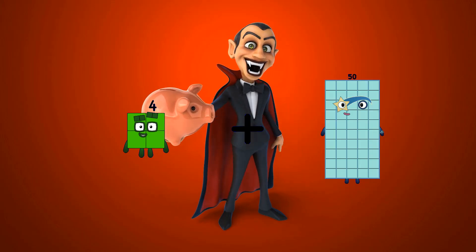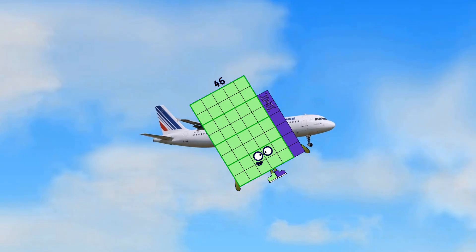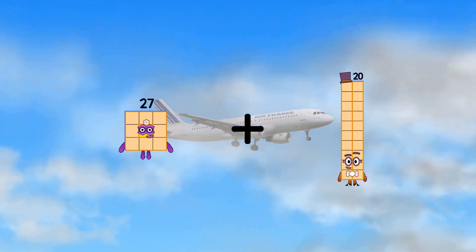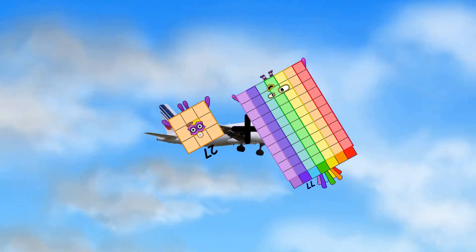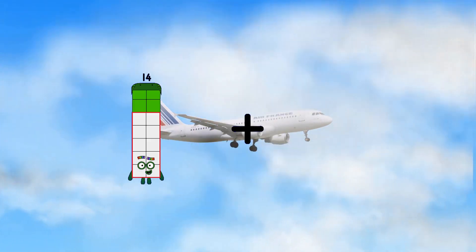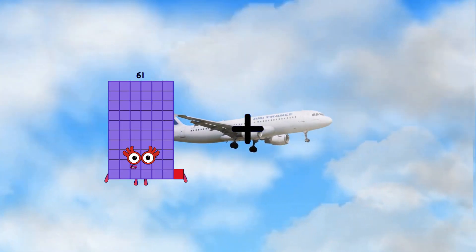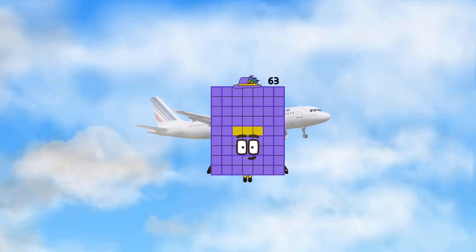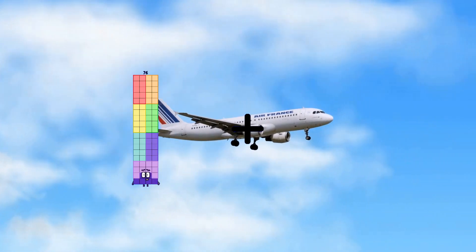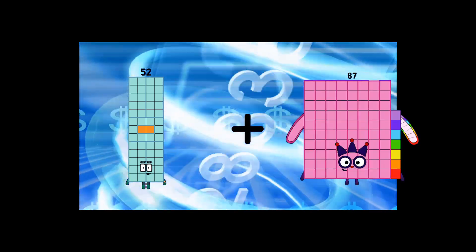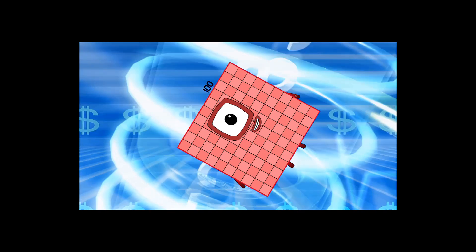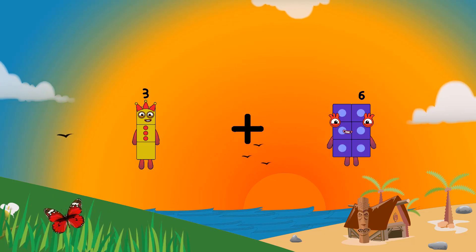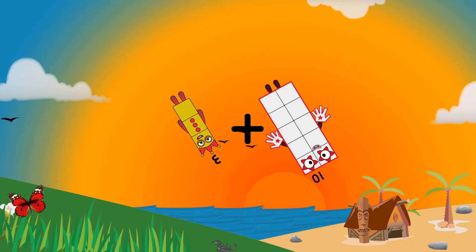4 plus 42 equals 46. 27 plus 77 equals 104. 61 plus 2 equals 63. 52 plus 48 equals 100. 2 plus 10 equals 13.